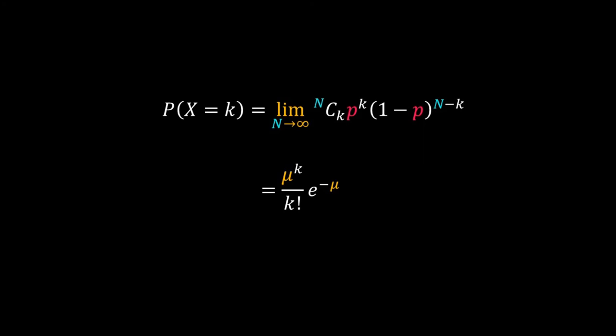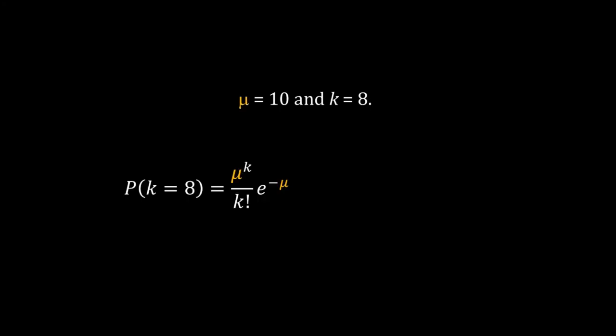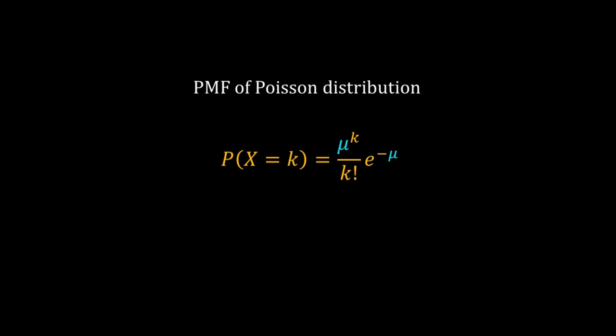Let's use this equation for the mRNA problem. For our mRNA problem, μ = 10 and k = 8. So the probability of having 8 mRNA in 10 seconds is μ to the power k divided by factorial k times e to the power minus μ. Plug the values of μ and k. Doing so, the probability is 0.1126.